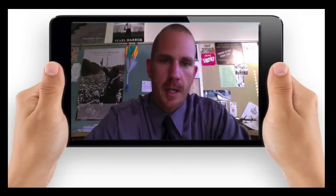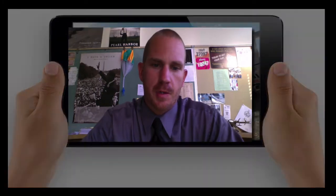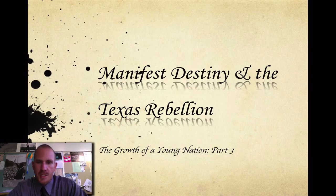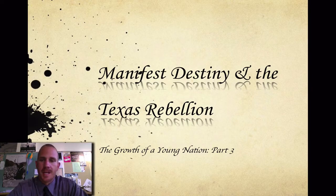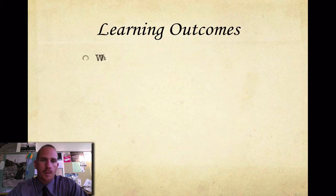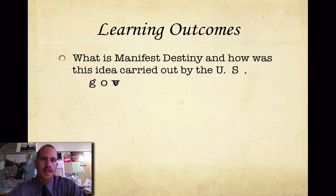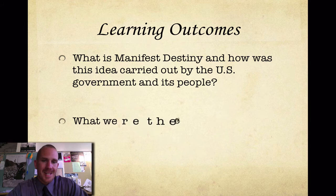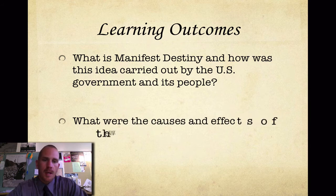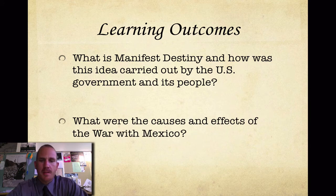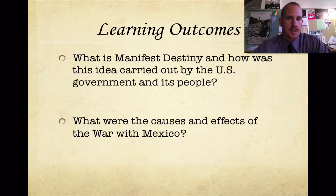Hey everybody, Mr. Belcher here again with another screencast. This is 'The Growth of a Young Nation,' Part Three, specifically referring to Manifest Destiny and the Texas Rebellion and their bid for independence. Our learning outcomes for today: number one, what is Manifest Destiny and how was the idea carried out by the United States government and its people? And number two, what were the causes and effects of the war with Mexico?